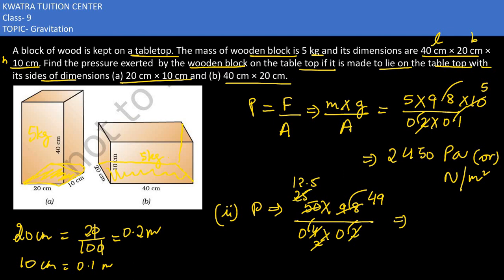And now multiply 12.5 with 49. So you would get 612.5 Newton meter square. Or you can write Pascal for it.